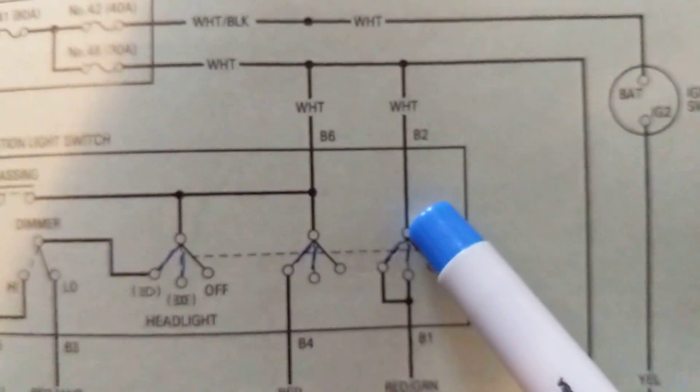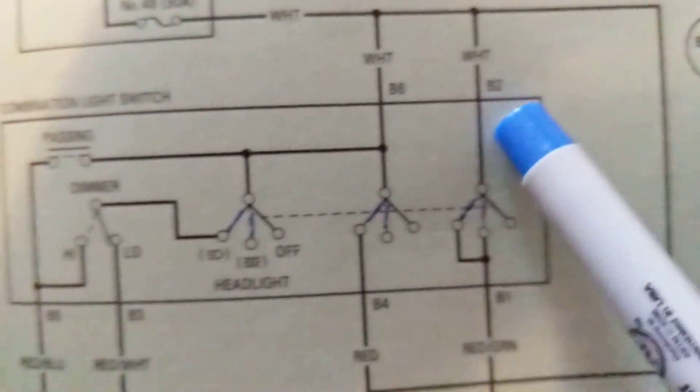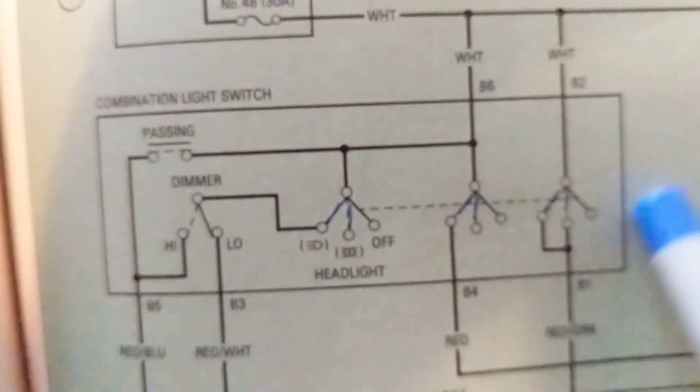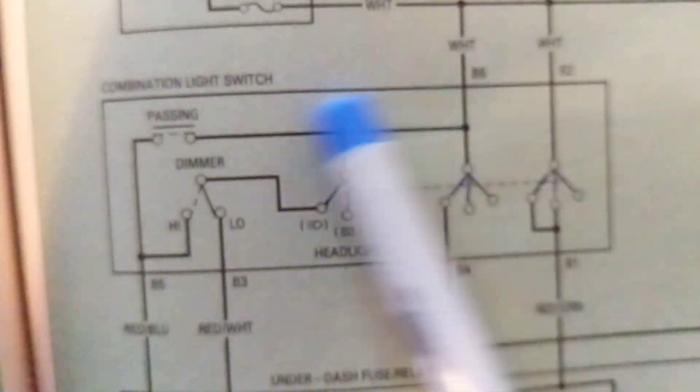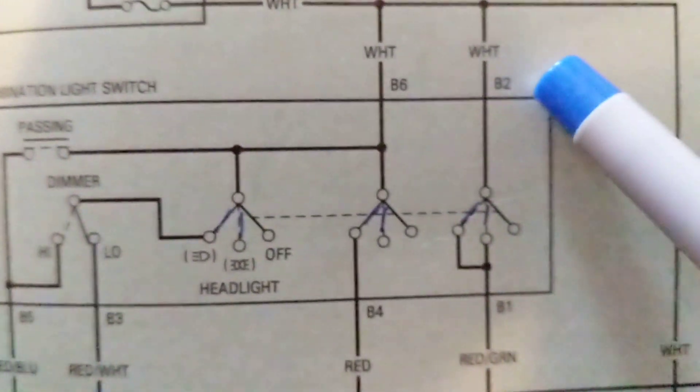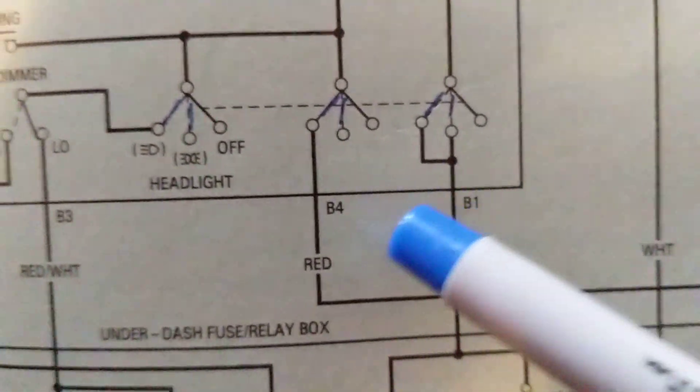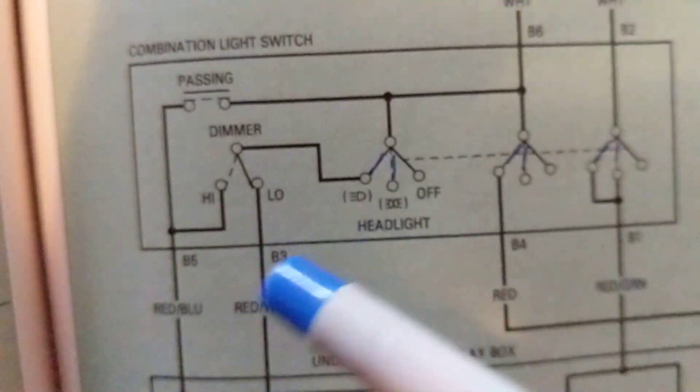Now white goes here. This goes to the connector. See, this light switch, like a module, denoted by all this black border out here. And the pins are B2, B6, B1 over here, B4, B3. These are the pins.